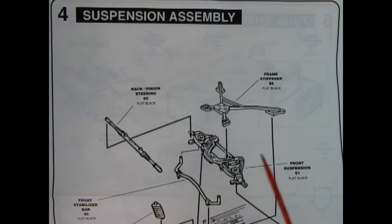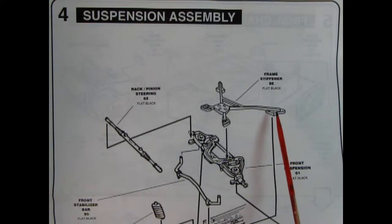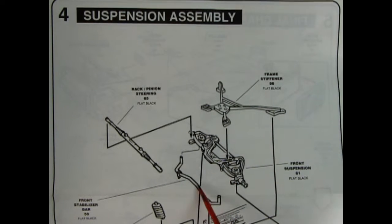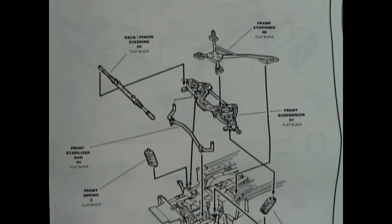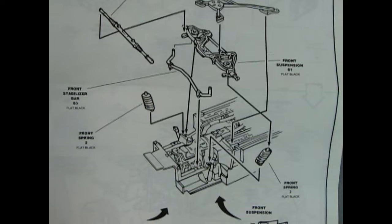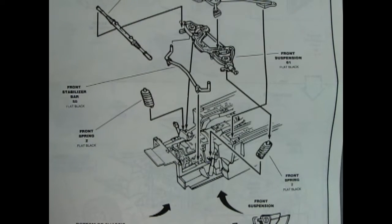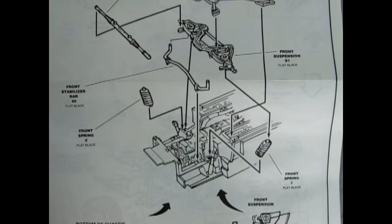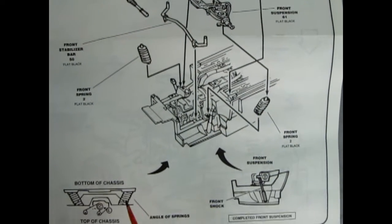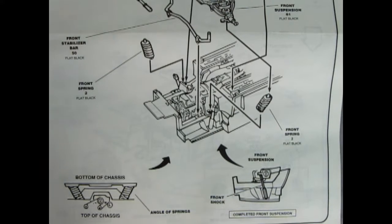Panel four shows our suspension assembly. And this is for up in the front. So here we have a frame stiffener for our convertible, and then the front suspension. And we've also got a stabilizer bar here, our rack and pinion steering, and our front springs. So there's the front springs. And this is showing from the side how it all glues together and from the bottom of the chassis. There's the side and the bottom of the chassis right there.